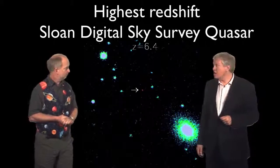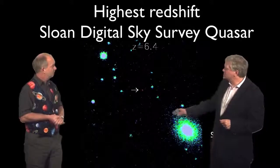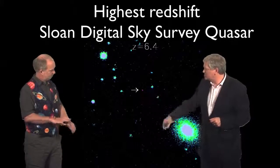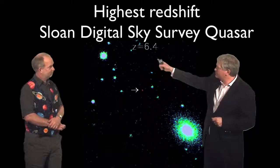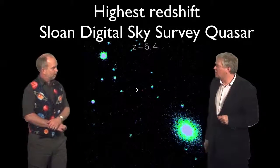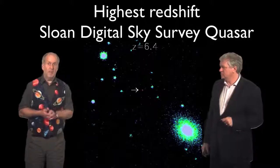So the Sloan Digital Sky Survey was a huge survey of the northern sky. And they mapped hundreds of millions of objects, looking for things that looked like stars, but had incredibly red colors. So I guess this is their biggest, or most distant object they saw, this tiny little red smudge. Right in the center, it doesn't look like much, but it's at a redshift of 6.4.